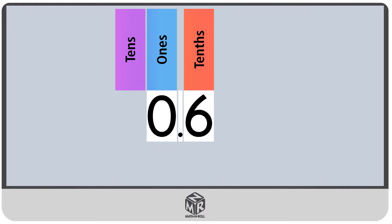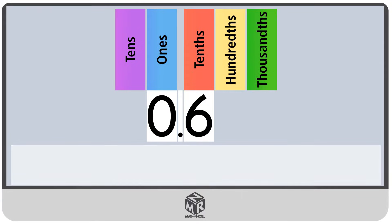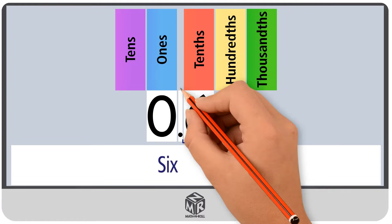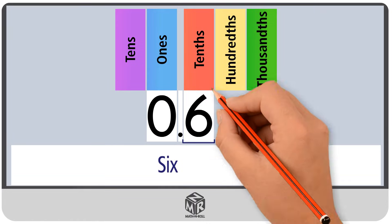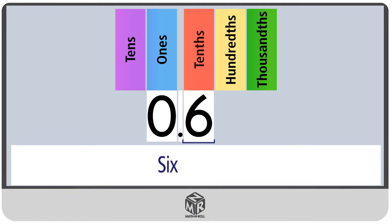0.6. In this example, we don't have a whole number, so we move straight to the decimal part. We write the decimal part in the same way that we would write the whole number. So we write 6. Then we write the place value of the last digit. The last digit is 6, and it's in the tenths place. So we have 6 tenths.